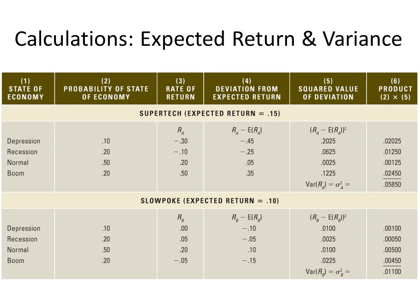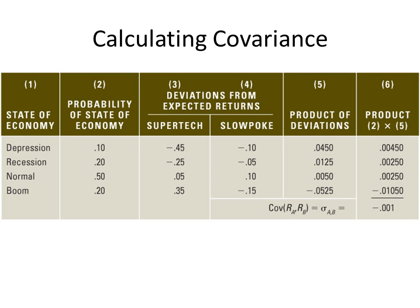Here we have the two stocks used in my video on the risk and returns of portfolios. We were able to find the expected return and the variance for each stock using the techniques described in that video. Using the variance, all we have to do is take the square root to get the standard deviation for each one. Calculating the covariance is similar to calculating the variance, only you wind up with the sum of the sixth column being covariance instead of variance.